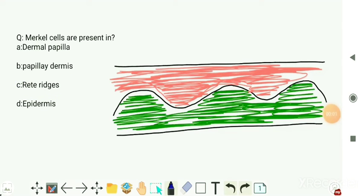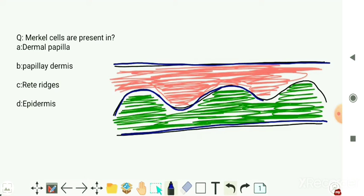If we take a transverse section of skin, what we can see is epidermis, dermis, and the junction between the epidermis and dermis. This junction has some elevations and some depressions.